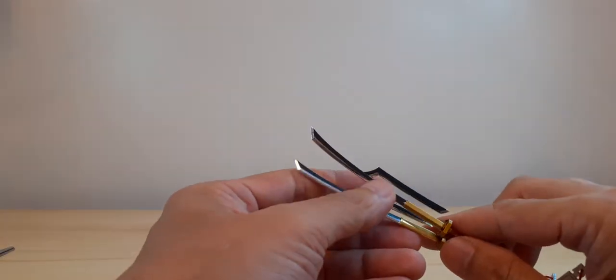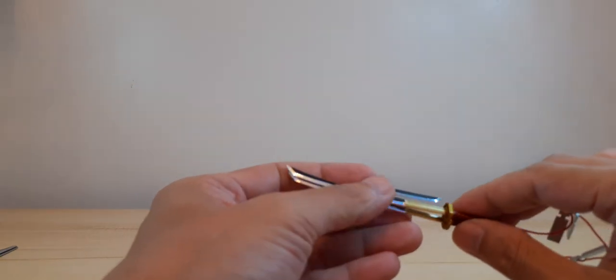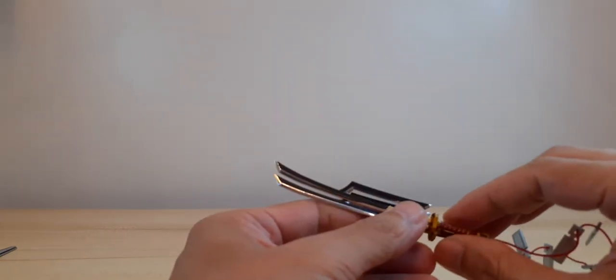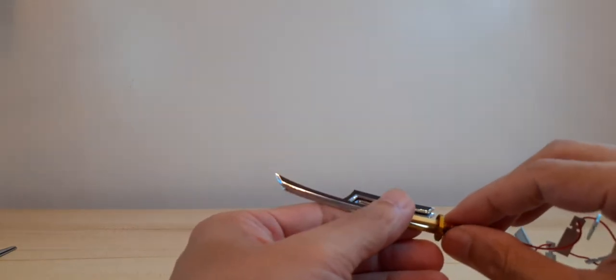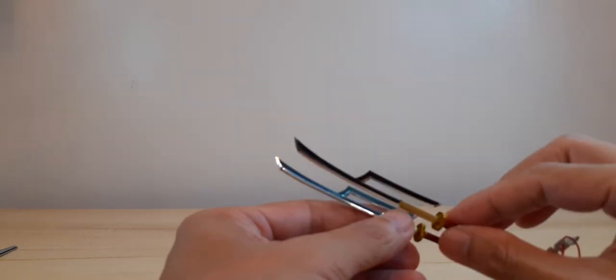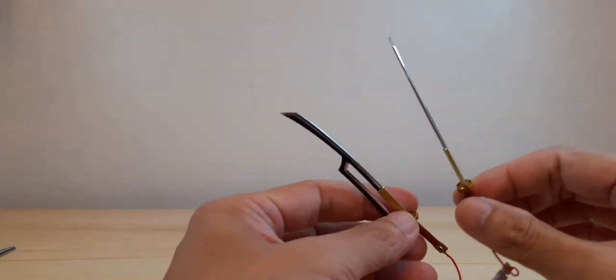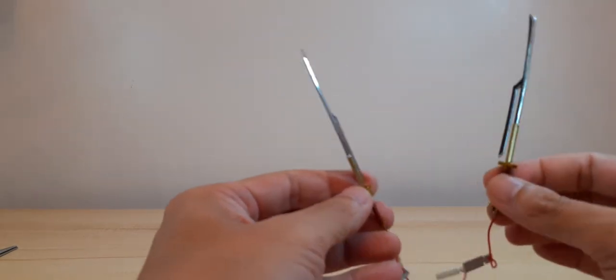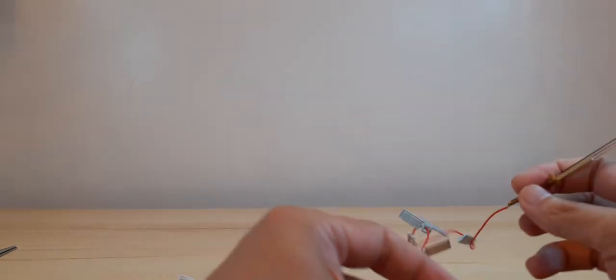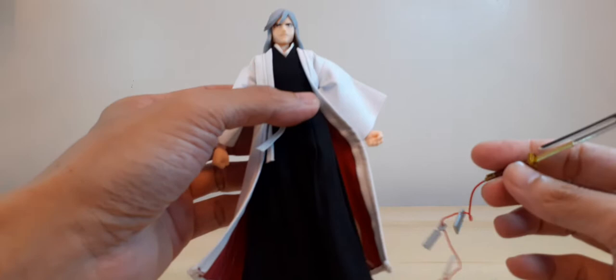So once he starts the chant, the single katana is separated, it becomes two. So once he chants that, you get this twin sword.